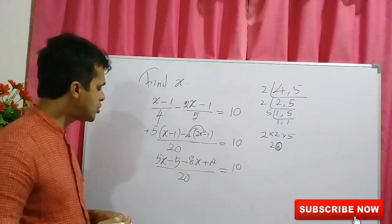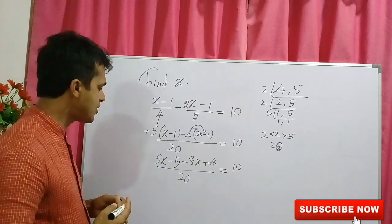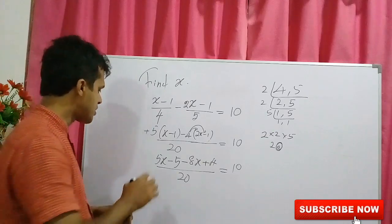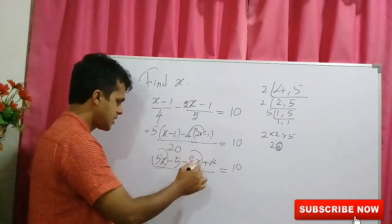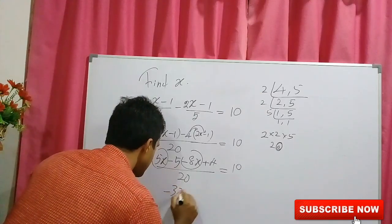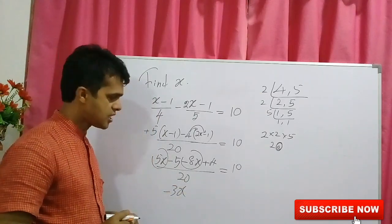Now, you could simplify. You can simplify the like terms. What are the like terms? 5x, 8x. 5x minus 8x. The answer is negative 3x.